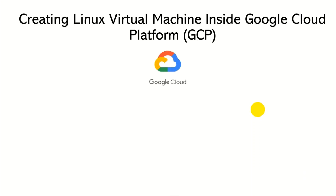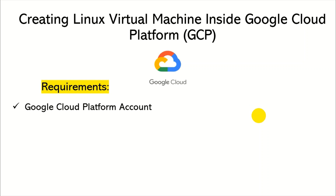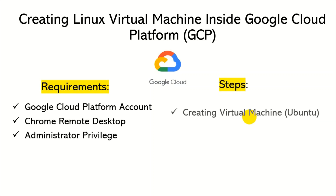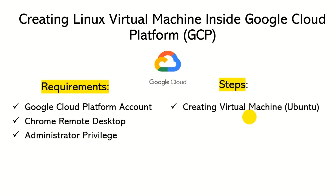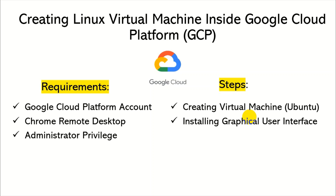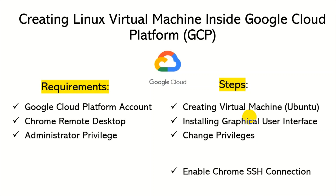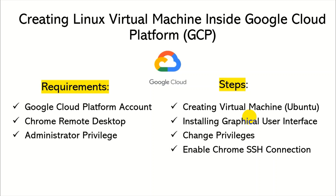Hello everyone, welcome to the CyberImportance YouTube channel. In today's video we are going to create a Linux virtual machine inside Google Cloud Platform. The requirements for today's task are a Google Cloud Platform account, Google Chrome Remote Desktop application, and administrative privileges to perform all the tasks. The steps we will follow: create a VM with Ubuntu, install a graphical user interface, change privileges, enable Chrome SSH connection, and verify the connectivity.